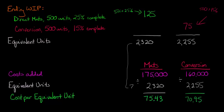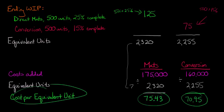So our cost per equivalent unit using the FIFO method is $75.43 per unit for direct materials and $70.95 for conversion costs. In the next video, we're going to talk about how to apply this cost per equivalent unit to calculate the ending work in process, the cost of units transferred out, and then we'll get into the differences between the weighted average method and the FIFO method of cost per equivalent unit.